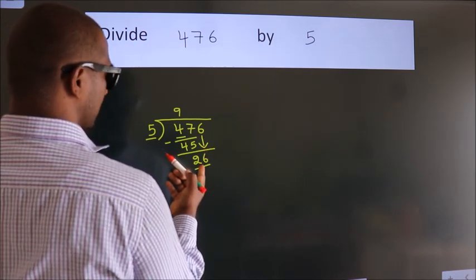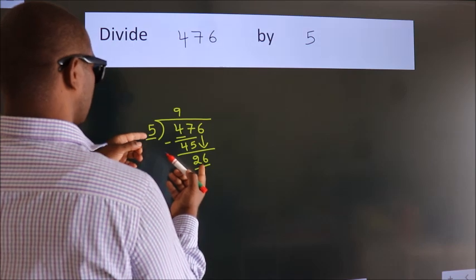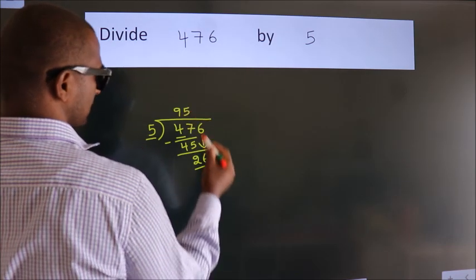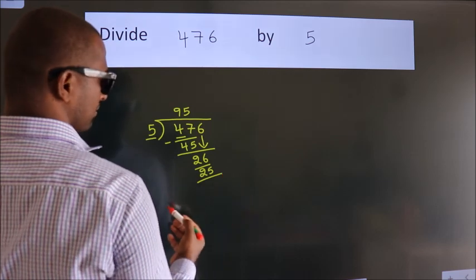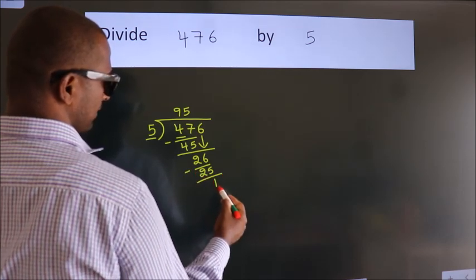A number close to 26 in the 5 table is 5 fives, 25. Now we subtract. We get 1.